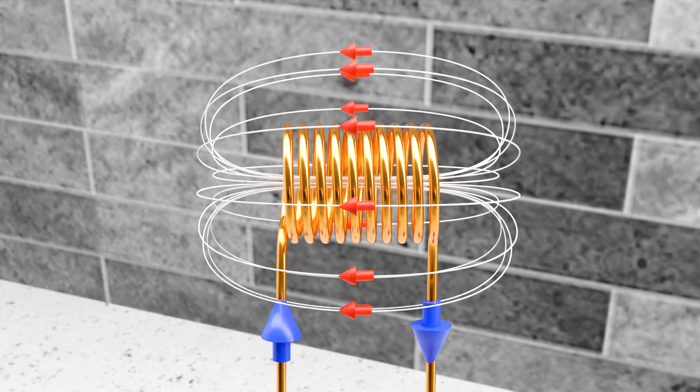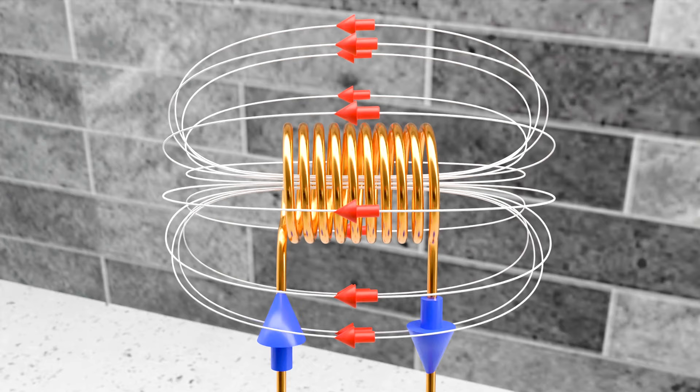Similarly, if we have a coil, here also on increasing the current, the strength of magnetic field also increases. And a change in direction of electric current leads to a change in direction of magnetic field.